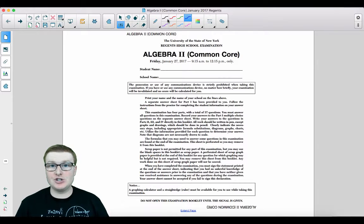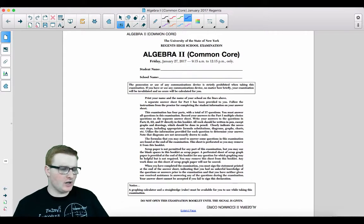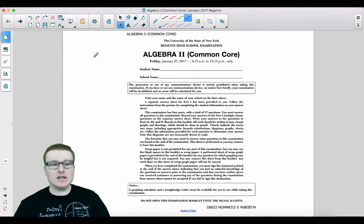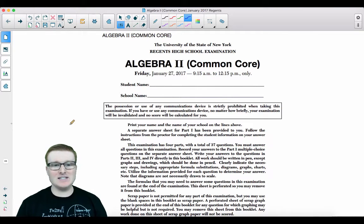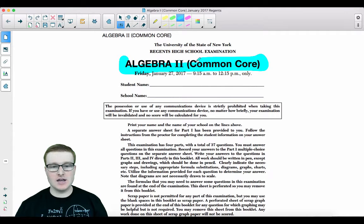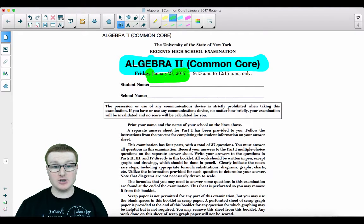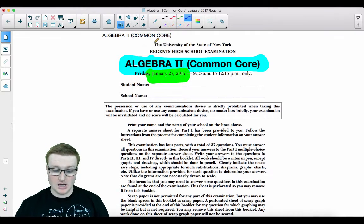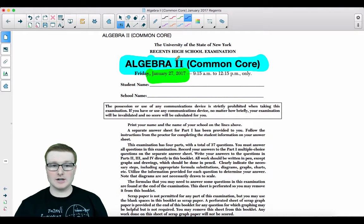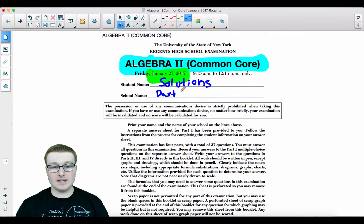Welcome back, Algebra 2 students, to another Regents Review video. This is the January 2017 Algebra 2 Common Core exam. This is where things start to get a little bit more tricky. The January 2017 exam, I thought, was a little bit harder than the previous two. These are going to be the solutions to part 1, questions 1 through 12, of this exam, or this video, I should say.